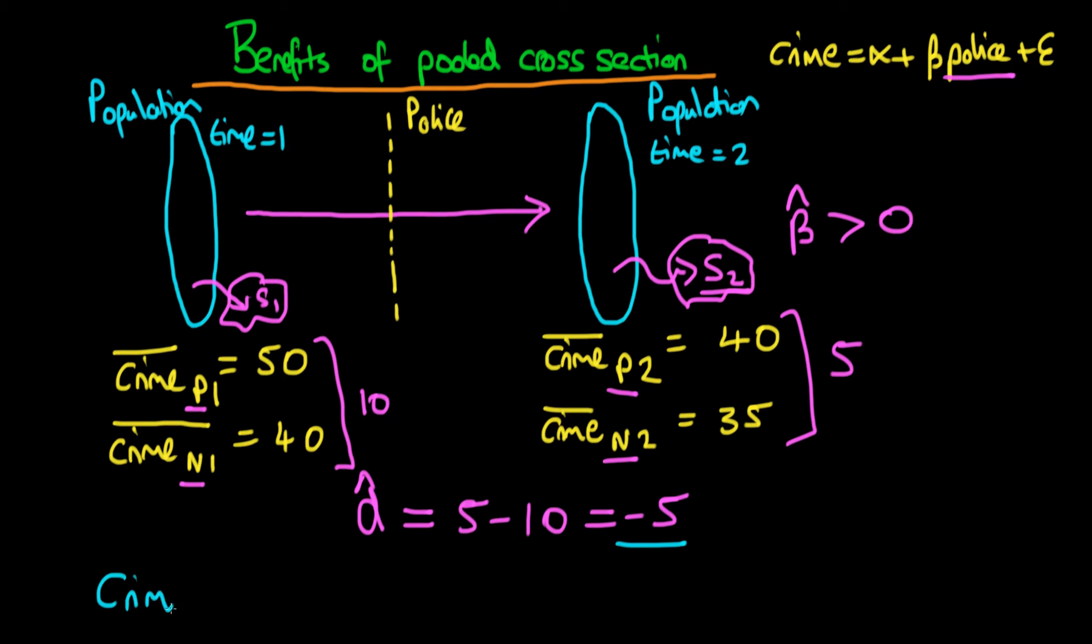Well, it turns out that one thing we can do is estimate a pooled cross-section model. So the idea here is that we regress crime on some constant beta 0 and then we have a dummy variable delta 2 which takes on a value of 1 if we're in time period 2 and a value of 0 if we're in time period 1. And importantly, we're estimating this across all individuals in both samples. We're just lumping both of these samples together.